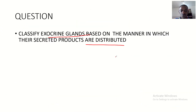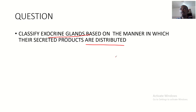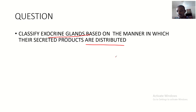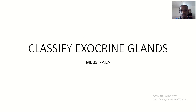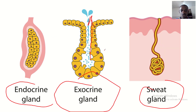We have come to the end of our tutorial. We saw the various classifications of exocrine glands, which include merocrine, apocrine, and holocrine, and we examined the different mechanisms of release of secretions in each of these types of exocrine glands. See you in the next tutorial.